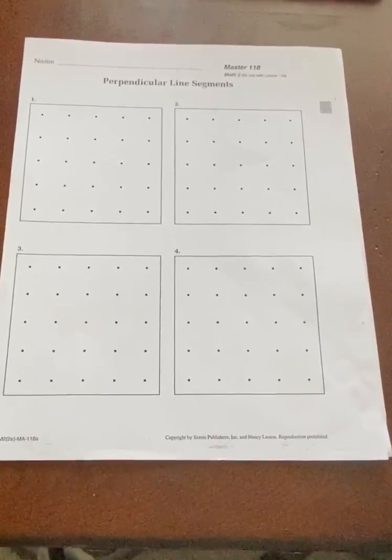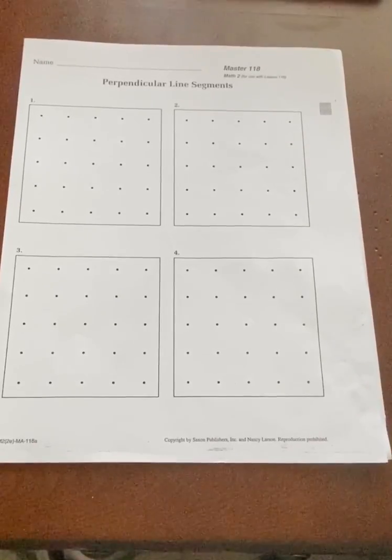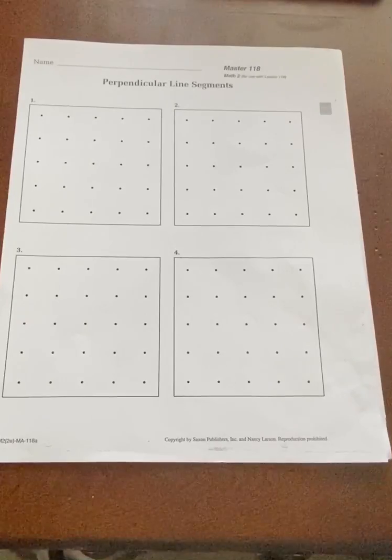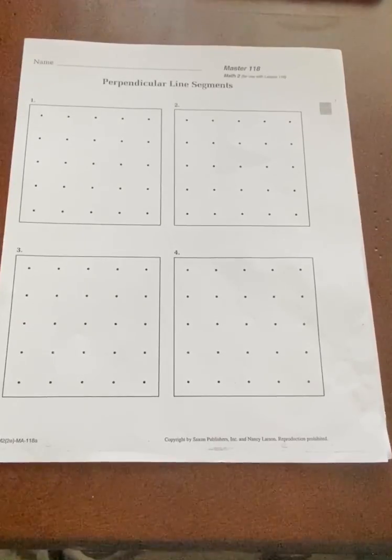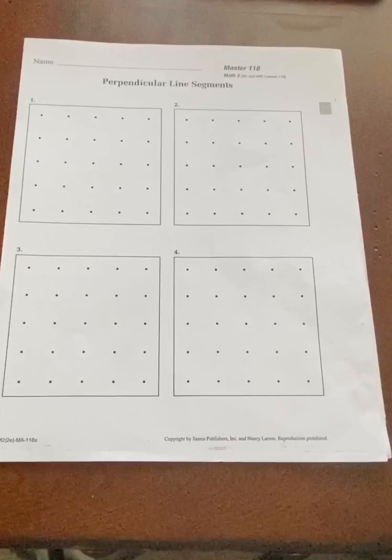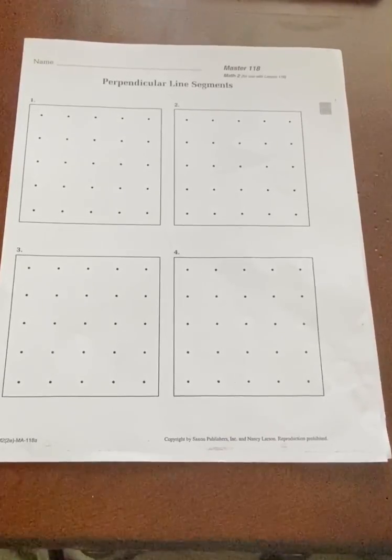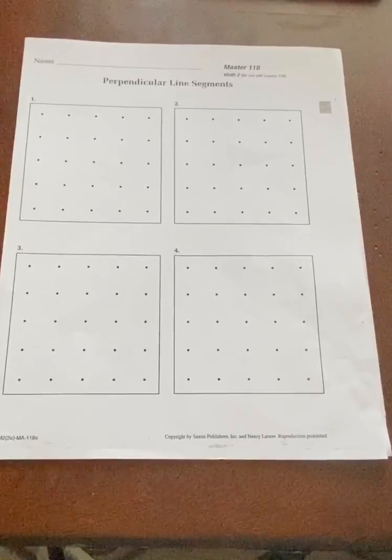So the last time we talked about line segments, parallel lines are two lines that will never meet. Now perpendicular lines are where they meet, but they meet at a 90-degree angle. Remember we talked about right angles and 90-degree angles? So that's what a perpendicular line segment does when it meets.